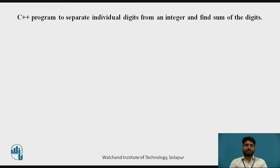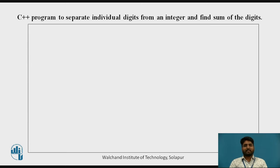First program: C++ program to separate individual digits from an integer and find sum of the digits. We have seen separating the individual digits from an integer in the last video, that is programs on C++ part 2 — please go through it. Here we are seeing the same program and additionally finding the sum of the digits.